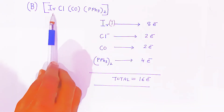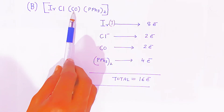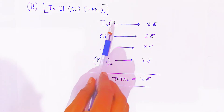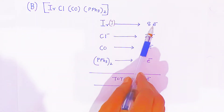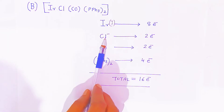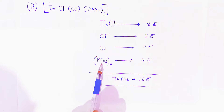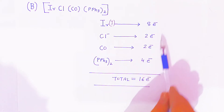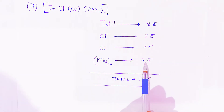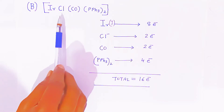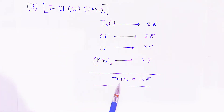For the iridium complex, it forms a complex with chloride, carbonyl, and triphenylphosphine ligands. Iridium(1+) carries 8 electrons in its outermost orbit. Chloride donates 2 electrons, carbonyl donates 2 electrons, and 2 triphenylphosphine ligands donate 4 electrons. Adding: 8 + 2 + 2 + 4 = 16 electrons. This complex is very stable, carrying a total of 16 electrons in the outermost orbit.